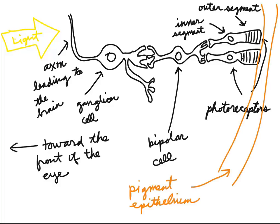At the very back of the eye, we have a layer of tissue that I've represented here known as the pigment epithelium.